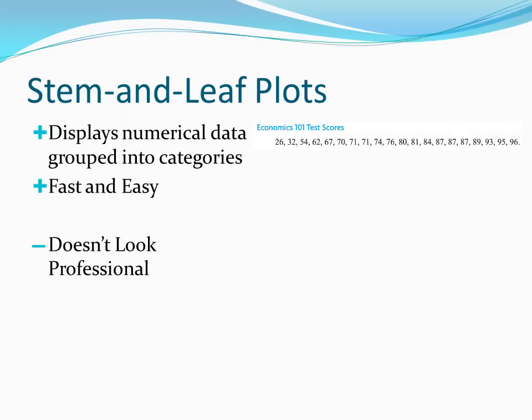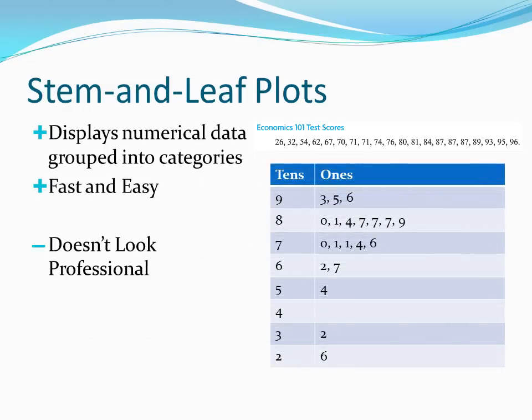To see an example, let's again take a look at that Econ 101 test. The stem in this case will be our tens digits, going from the twenties on the bottom to the nineties on the top, and the leaves will be our ones digits written in ascending order. For instance, we had scores of 93, 95, and 96 — our stem is 9 and our ones are 3, 5, and 6. Notice again how we can detect the clusters; it's very clear that most of the students scored around the 80s. And notice also how we can see that gap around the 40s where there were no scores. So while we don't have a graph we'd want to show off, we do get a very good picture of just where our data is and what our data is trying to tell us.